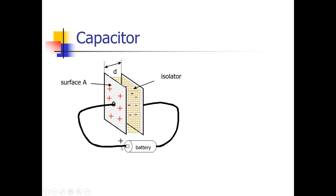When we put a battery on this capacitor, it will be charged. Based on this setup we can give the relationship of these physical parameters and the capacitance. The capacitance is equal to epsilon — the dielectric constant of the material in between the plates — times A divided by D. So when we have a capacitor with a higher surface A, the capacitance value will be higher. And when D gets smaller, the capacitance value will also increase.